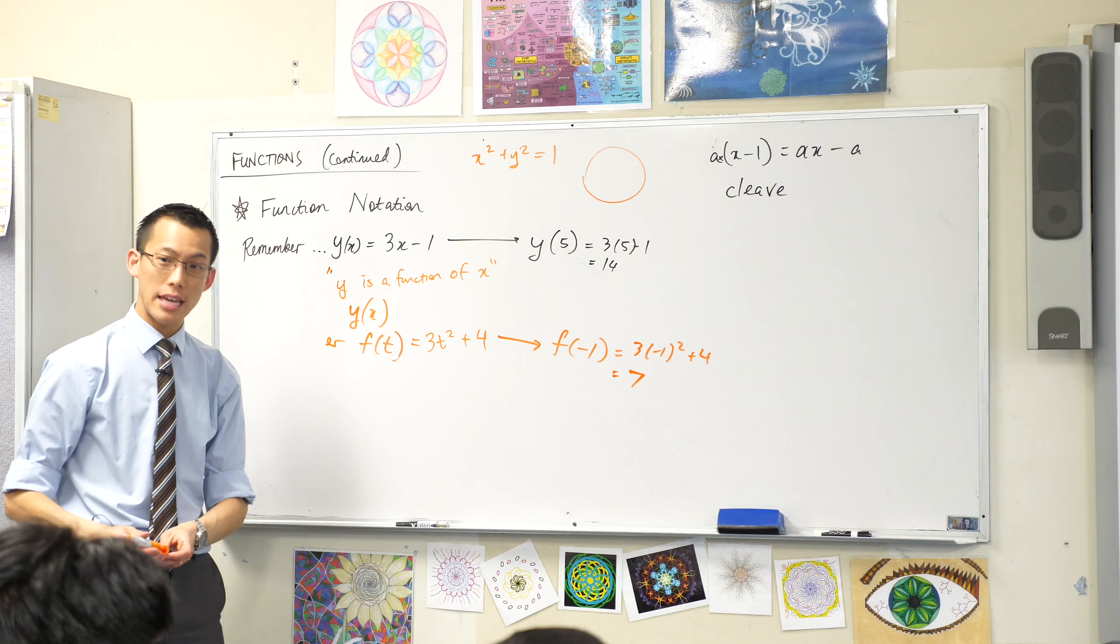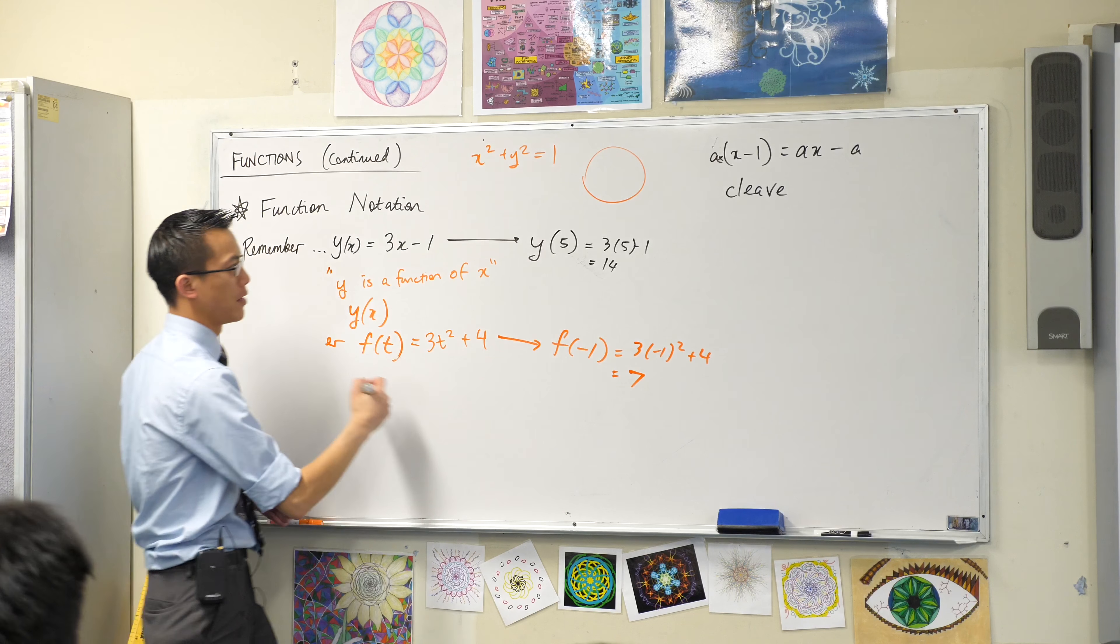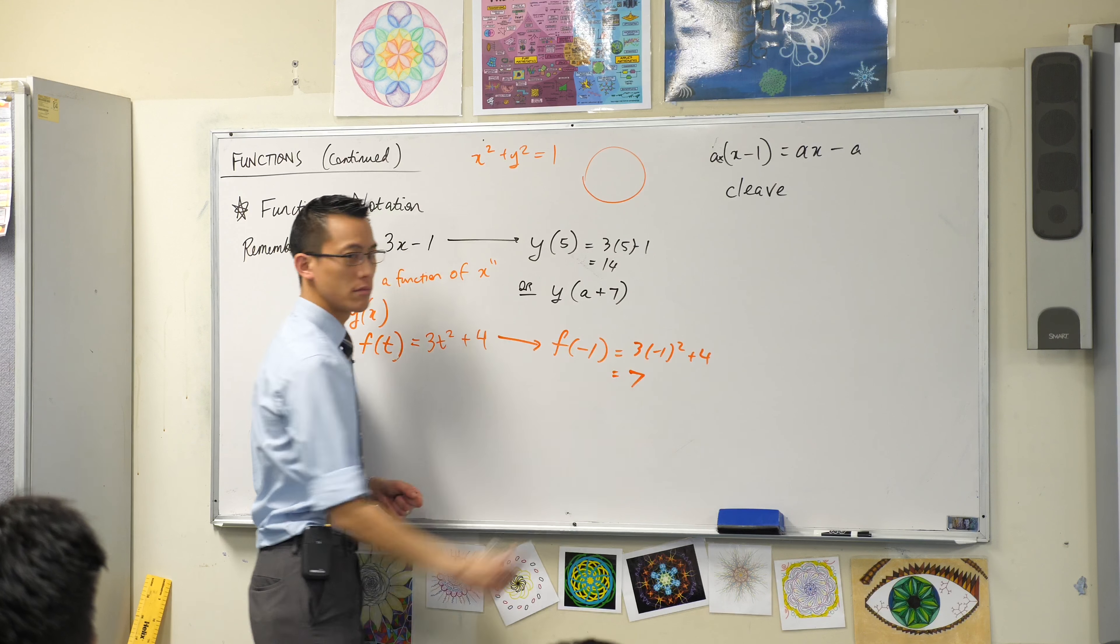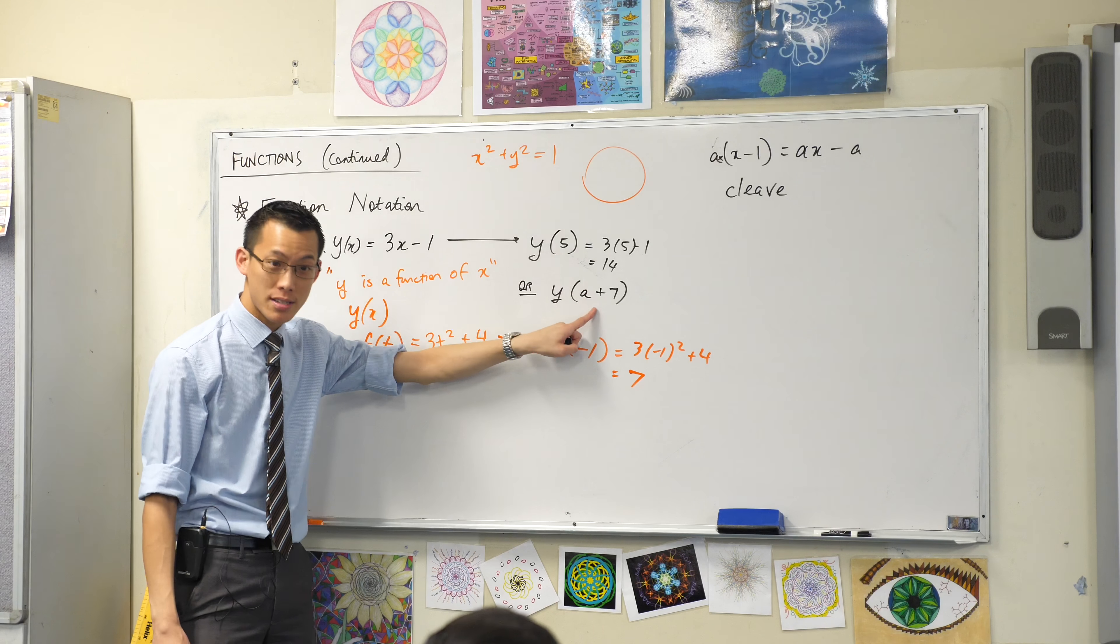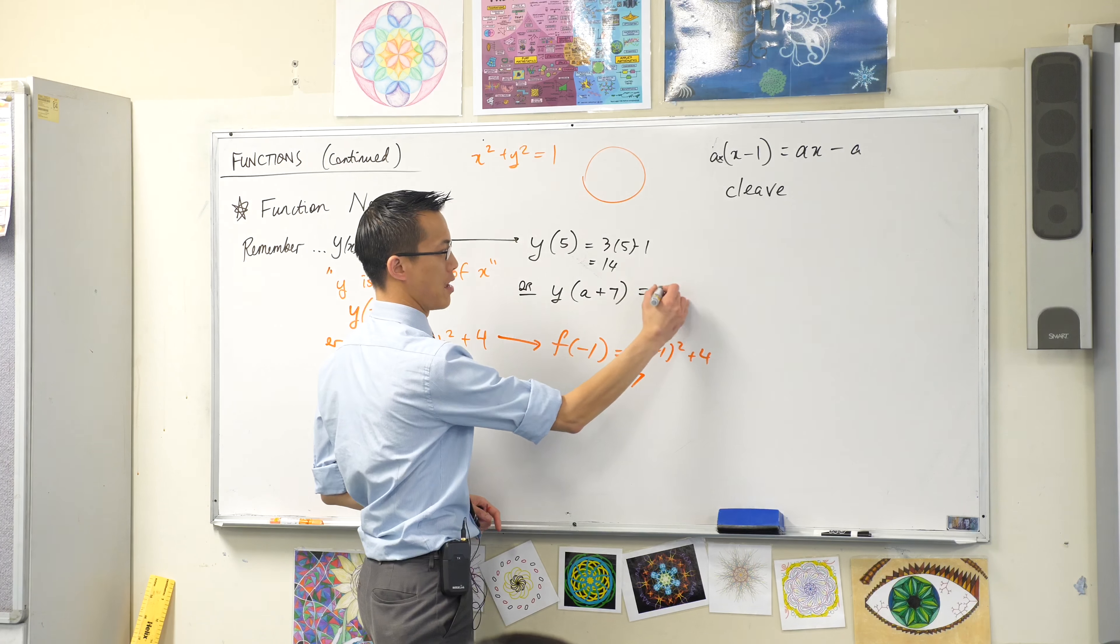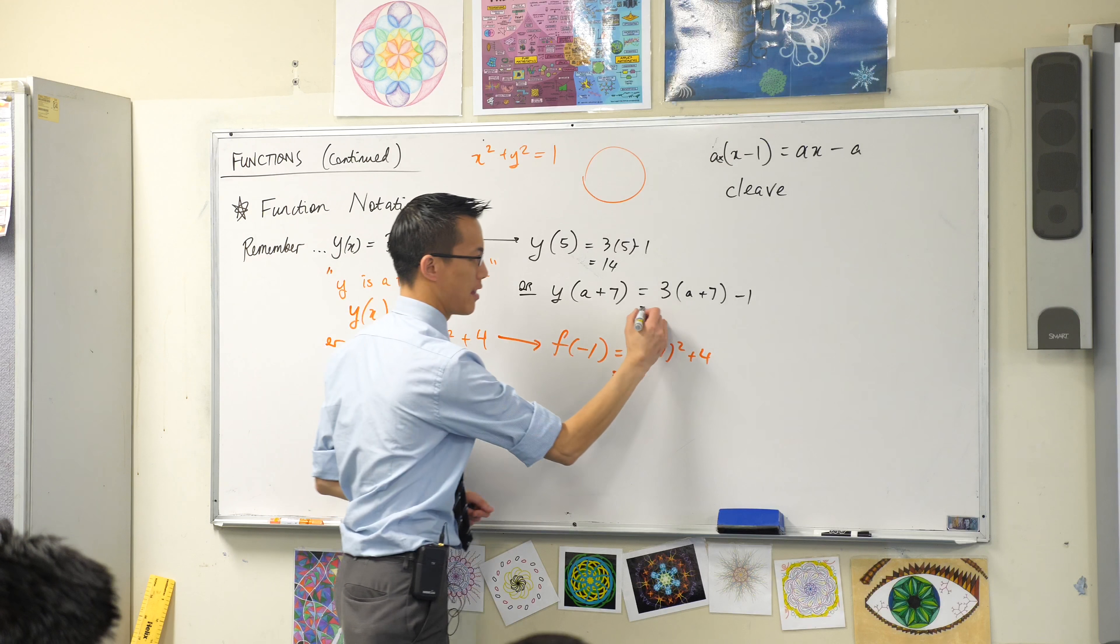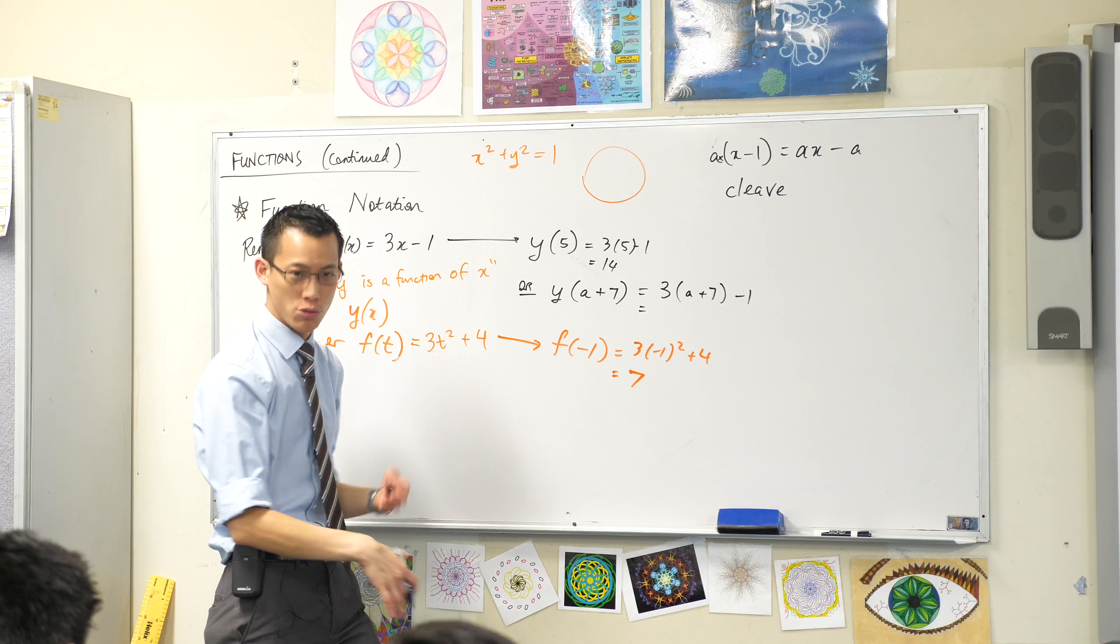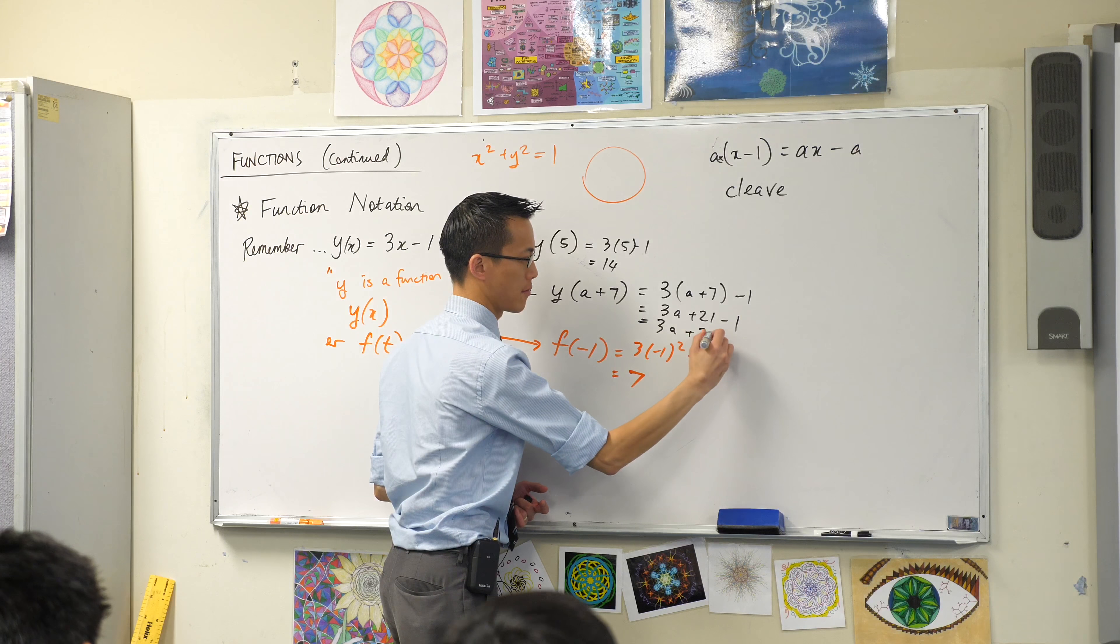So you can substitute anything in you like. You could even substitute in other pronumerals. For instance, I could try, let's go back to the y one. I could say, oh, how about y of a plus 7? Instead of putting an x, instead of putting a 5, I put an a plus 7 in there. What that means is everywhere you saw an x before, replace it with a plus 7. Well, let's see what happens. 3 times (a plus 7) minus 1. Let's see. Yeah, okay, so this is just brackets, isn't it? It's a bit funny, we're mixing it together, and I know that's a bit confusing, but you'll get used to it. This is 3a plus 21, take away 1. 3a plus 20. Done.